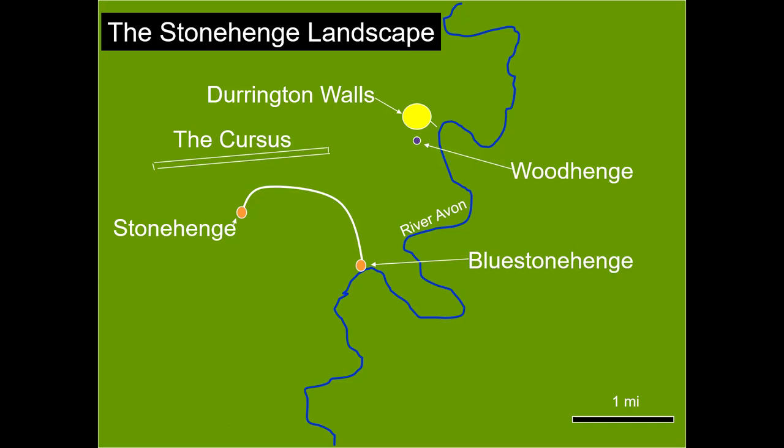Just north of Stonehenge and Blue Stonehenge is a place called the Cursus, a kind of dividing area — a series of rectangular ditches carved into the bedrock. North of the Cursus there are two features: one is called Durrington Walls, which marks the location of a central plaza around which hundreds of Neolithic village homes have been identified. Durrington Walls also has an avenue that connects it to the River Avon.